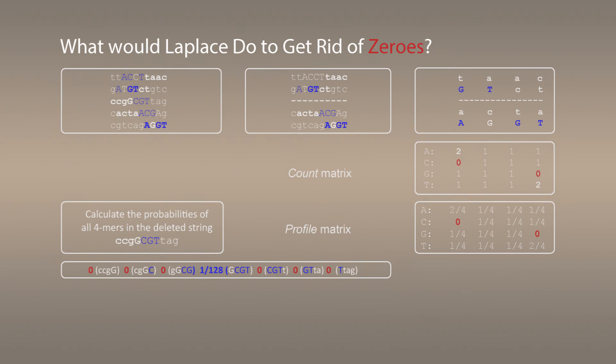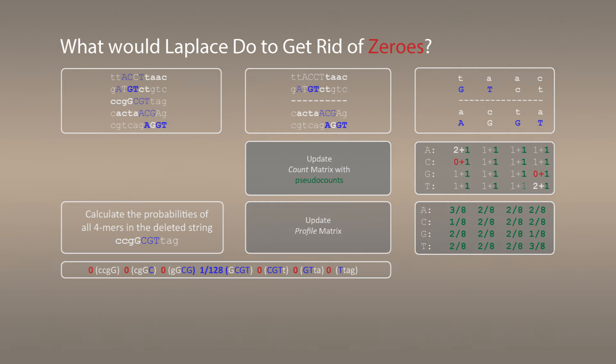It may sound counterintuitive, but let's see how Laplace would get rid of zeros in the profile matrix. In this case, what we need to do to update the profile matrix to get rid of zeros. According to the Laplace rule of succession, we should assume the possibility that every event represented in the profile matrix can occur. Therefore, we should add one to every entry of the profile matrix. Here I show how Laplace would update the count matrix by adding one to all entries. As a result, the profile matrix also will get updated, all probabilities will get updated.